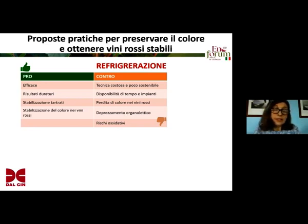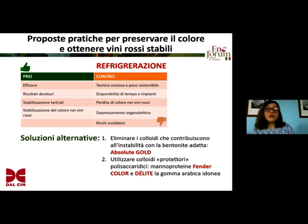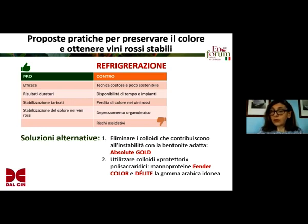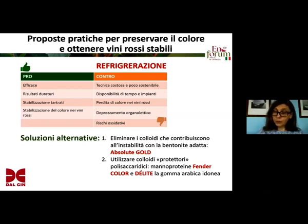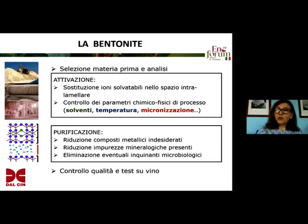Furthermore, there can be problems in terms of colour loss, especially in reds. So, what about alternative solutions? We can eliminate the colloids that contribute to instability with bentonite — with the right product, and we will talk about Absolute Gold — or the alternative might be that of using colloids that are polysaccharides which work as protecting colloids. In that case, we will see the usage of Fender Collar and DELETE. Fender Collar is a manoprotein; DELETE is a gum arabic.